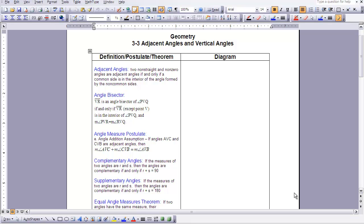So the first one I want to talk about is adjacent angles. We've talked about the word adjacent before in relationship to consecutive angles and consecutive vertices. But now we're going to just talk about adjacent angles. And what that is is two non-straight and non-zero angles—so it can't be 180 or zero degrees. They're adjacent angles if and only if the common side is in the interior of the angle formed by the non-common sides. So let me draw a picture of that for you.